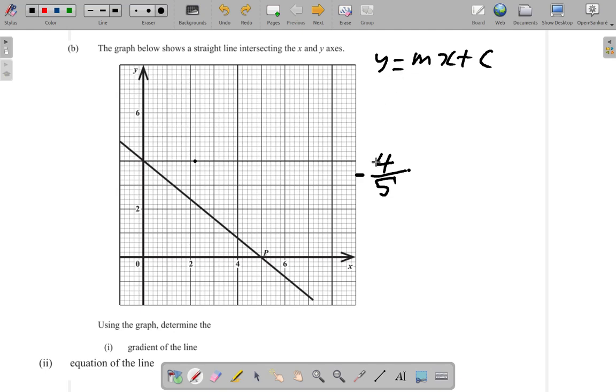Now, we already know m, the gradient, negative four-fifths. So, y equals negative four-fifths x plus c.